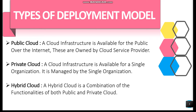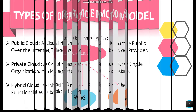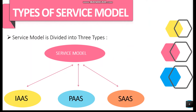Hybrid cloud is a combination of the functionality of both public and private cloud. The service model is divided into three types: IaaS, PaaS, and SaaS.